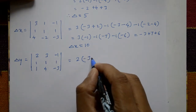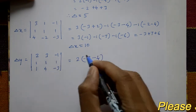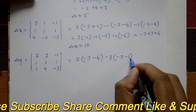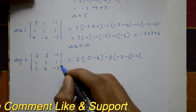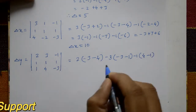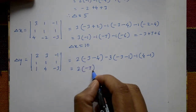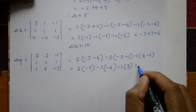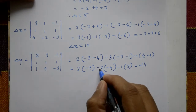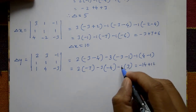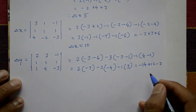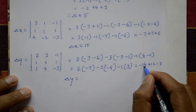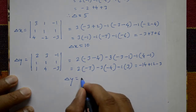Expanding Delta y: 2 into (-3 - 4) = 2 into (-7). Minus 3 into (-3 - 1 into 1). Minus 1 element: (4 - 1). This gives 2(-7) - 3(-4) - 1(3) = -14 + 12 - 3. Therefore, Delta y is equal to -5.